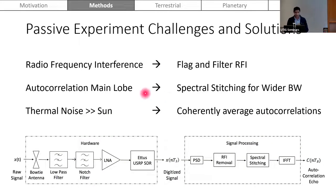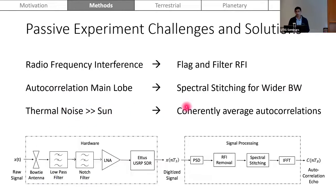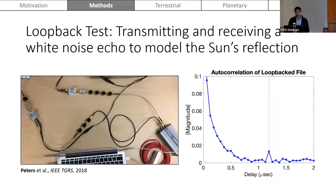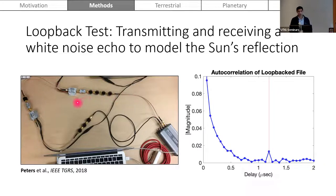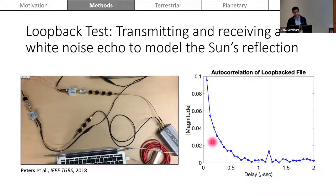To summarize the challenges and solutions: radio frequency interference is removed using filtering techniques; the autocorrelation main lobe is reduced using spectral stitching for increased effective bandwidth and improved range resolution; and because the thermal noise is actually greater than the sun power, we use coherent summation to increase signal-to-noise ratio. Before going to the field, we used a loopback test to simulate receiving a white noise source. We transmitted a white noise source and echo, attenuated it to sun power level, used our amplification chain to bring it above the noise floor, and received it with our software-defined radio. We can see a very clear peak in the autocorrelation function, confirming that our SDR and receiver chain can extract the sun's reflected echo peak.